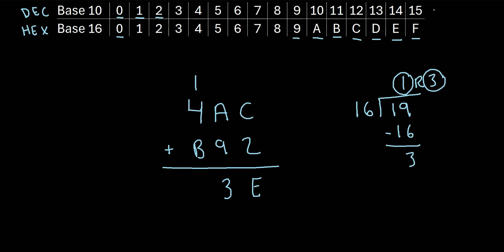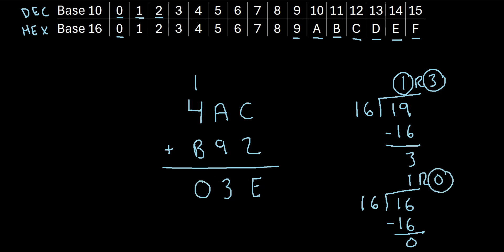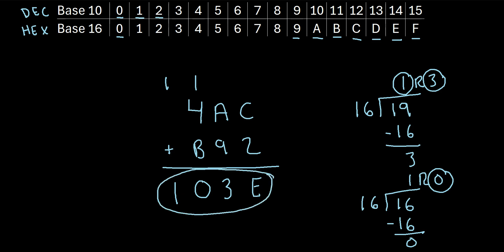Notice there's no letter that represents 16 in the hexadecimal system. So we use the trick again: how many 16s go into 16? That would be 1. So 16 times 1 is 16. Then 16 minus 16 gives a remainder of 0. So we write 0 right here, and the whole number 1 gets placed in the next column. In this last column there's nothing left to add, so the 1 just comes down here. Our final answer is 103E.